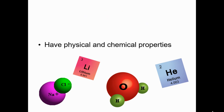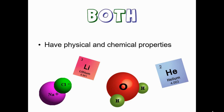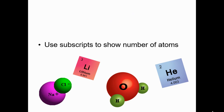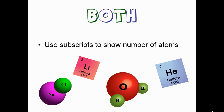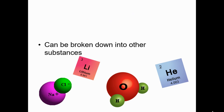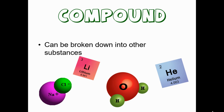Things that have physical and chemical properties are both elements and compounds. If it uses subscripts to show the number of atoms, it could be an element or a compound. If it can be broken down into other substances, it's a compound.